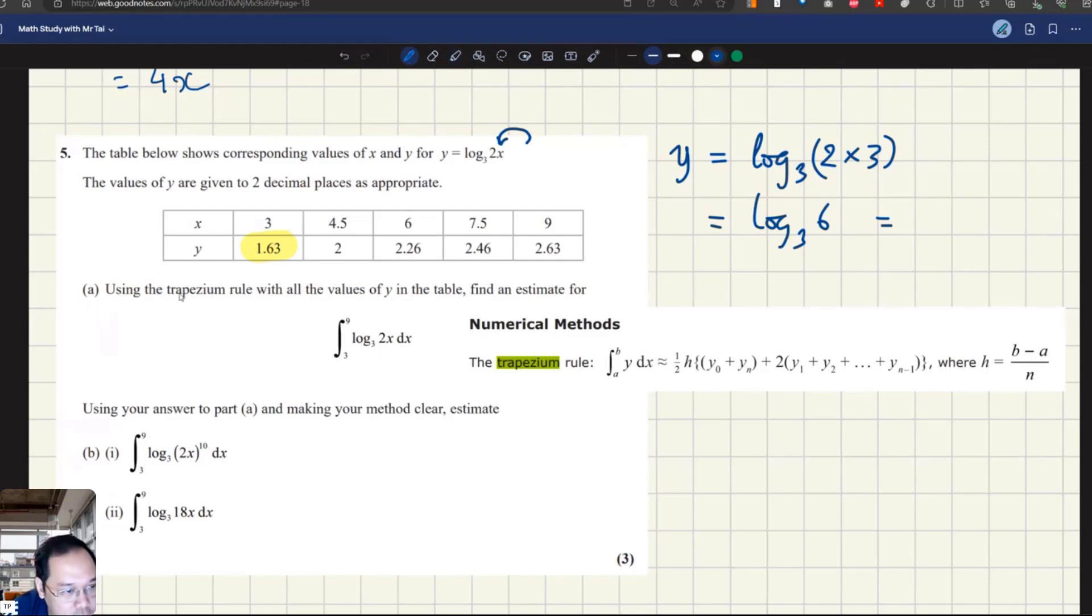Question (a) asks us to find the integration from 3 to 9 of the function using the trapezium rule with all the values of y in the table and find an estimate for this integration.